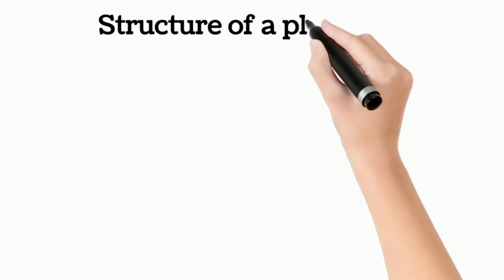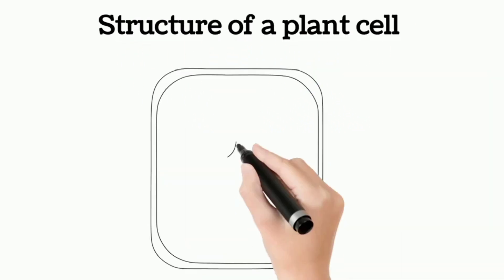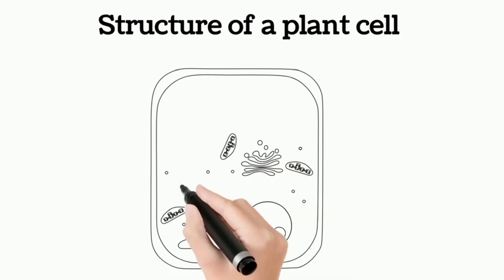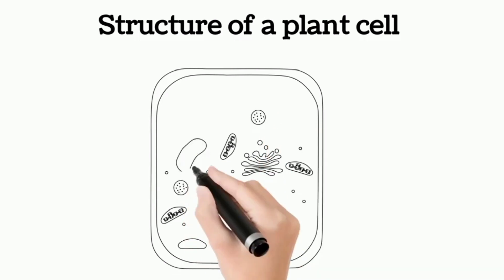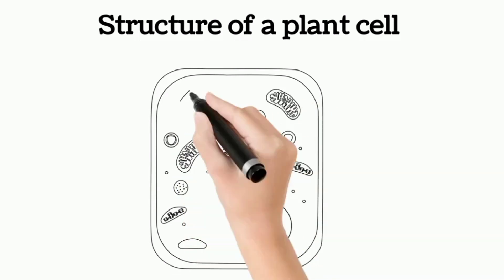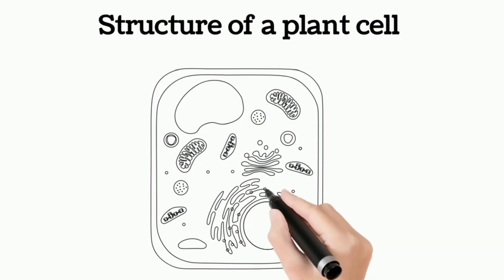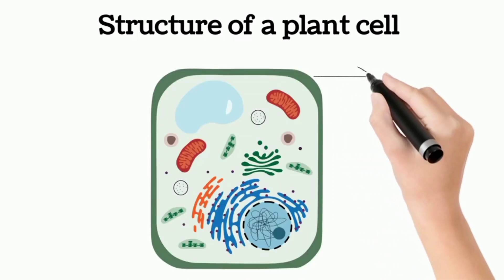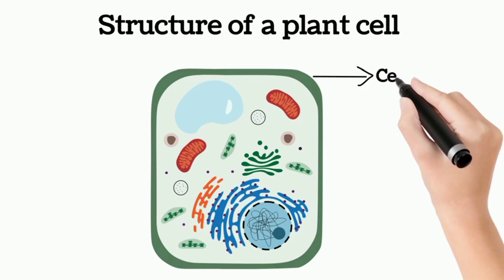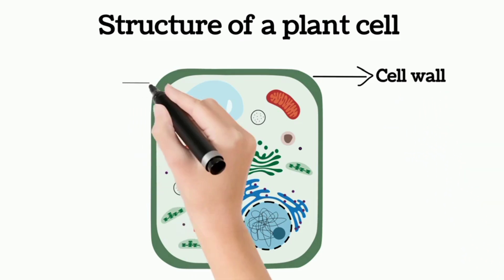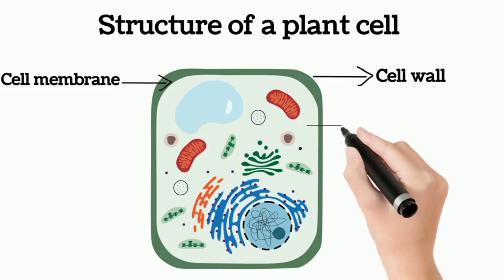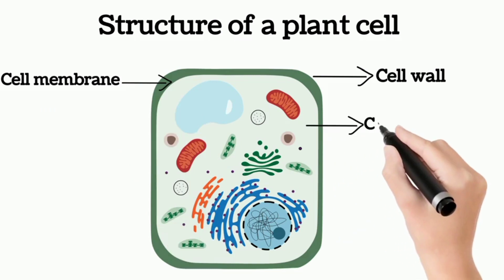Structure of a plant cell. This diagram shows a plant cell structure which consists of the following parts: cell wall, cell membrane, cytoplasm.